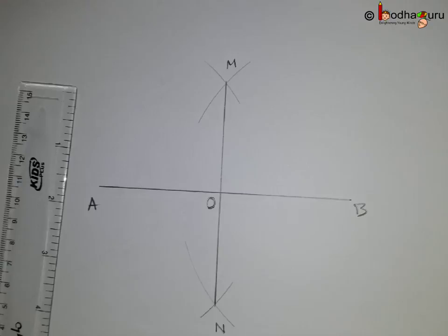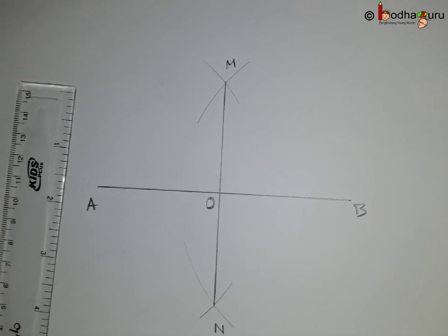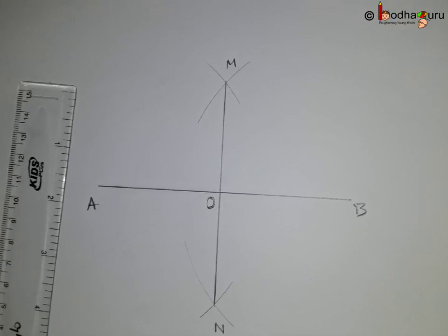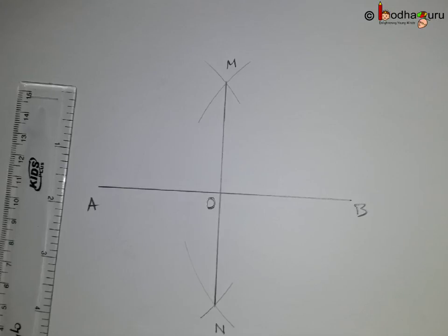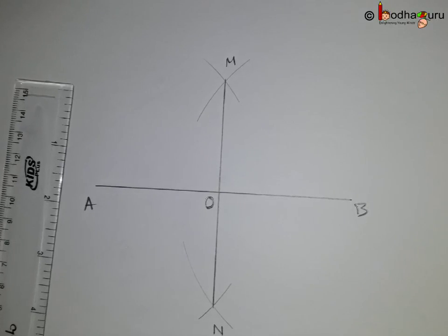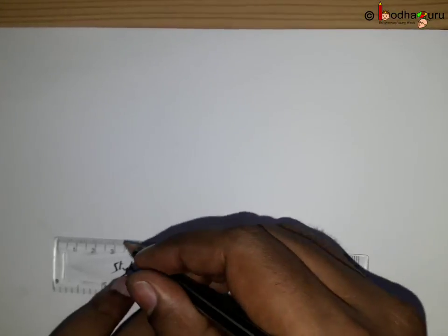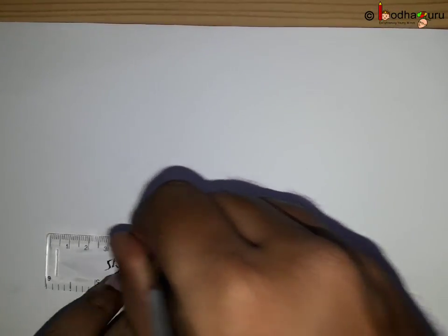Now, using a compass, we can also draw a perpendicular bisector of a line, that is a perpendicular which divides the line into two equal halves. We take any line segment.